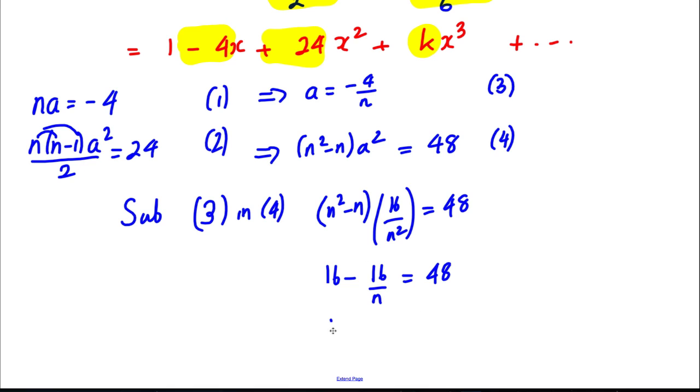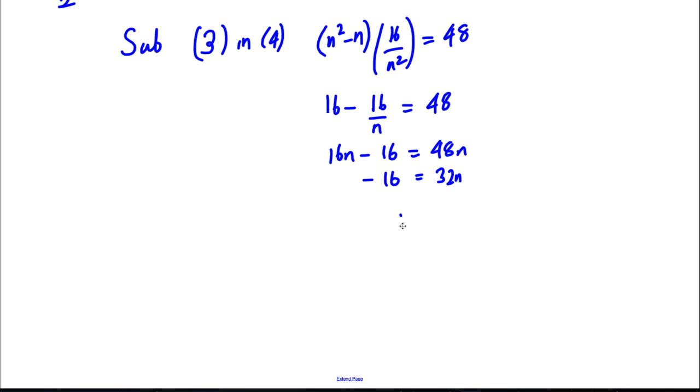Timesing everything by N, 16 N minus 16 would be 48 N. Subtracting 16 N of both sides, we would get ourselves 32 N here. And then dividing both sides by 32, N must be equal to negative 1 half.